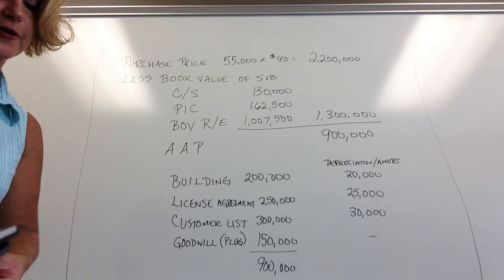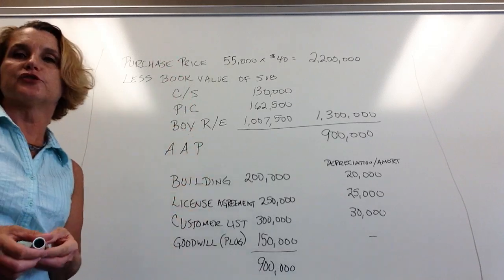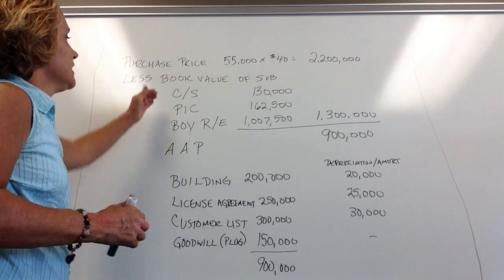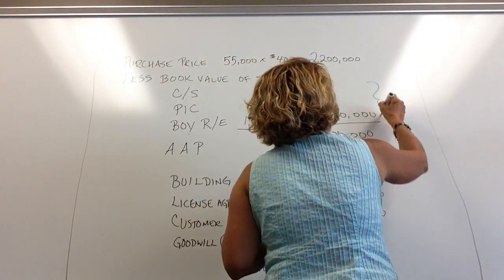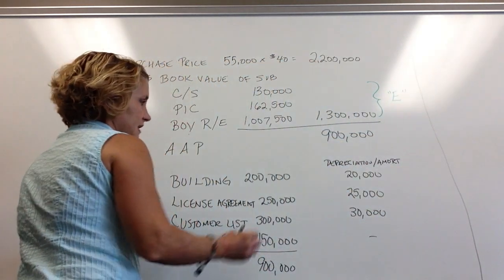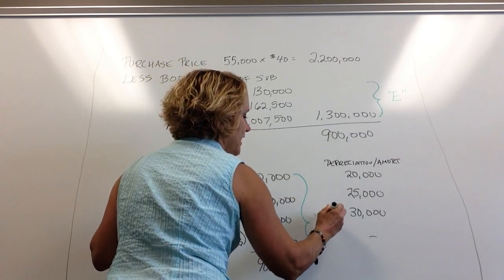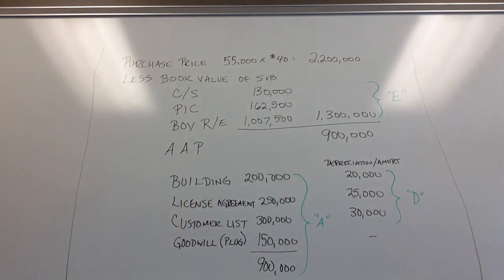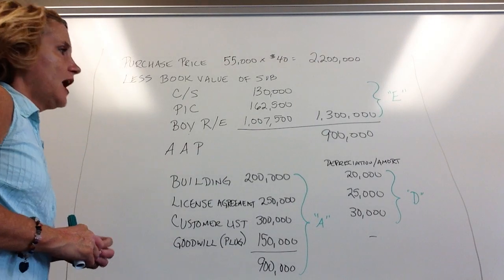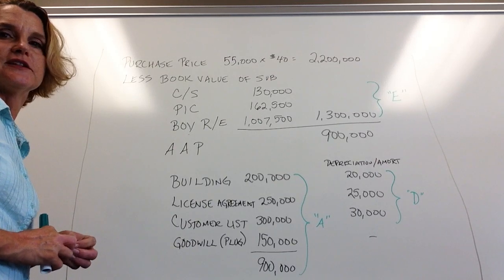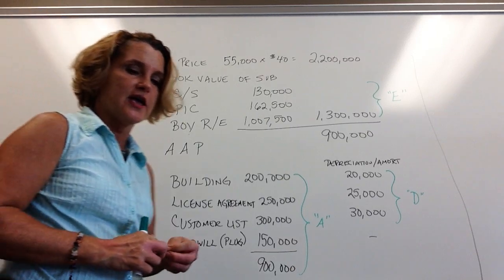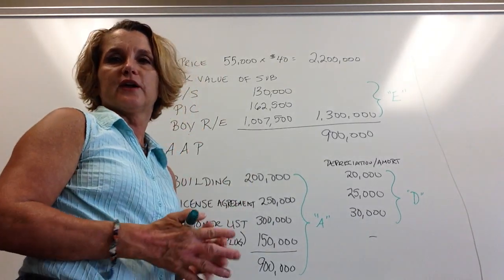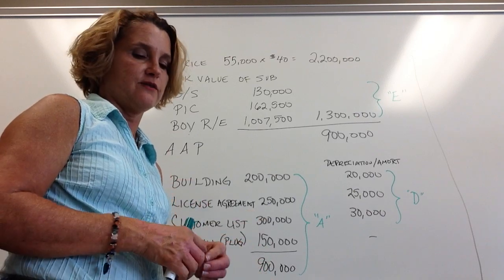Even if the problem doesn't explicitly ask you to map this out, you need to do it to build your journal entries properly. These equity account figures will form the E entry, the AAP asset figures will form the A entry, and the depreciation figures will form the D entry. We also need to consider the subsidiary's income, because when the parent follows the equity method they record equity income for their interest in the subsidiary.